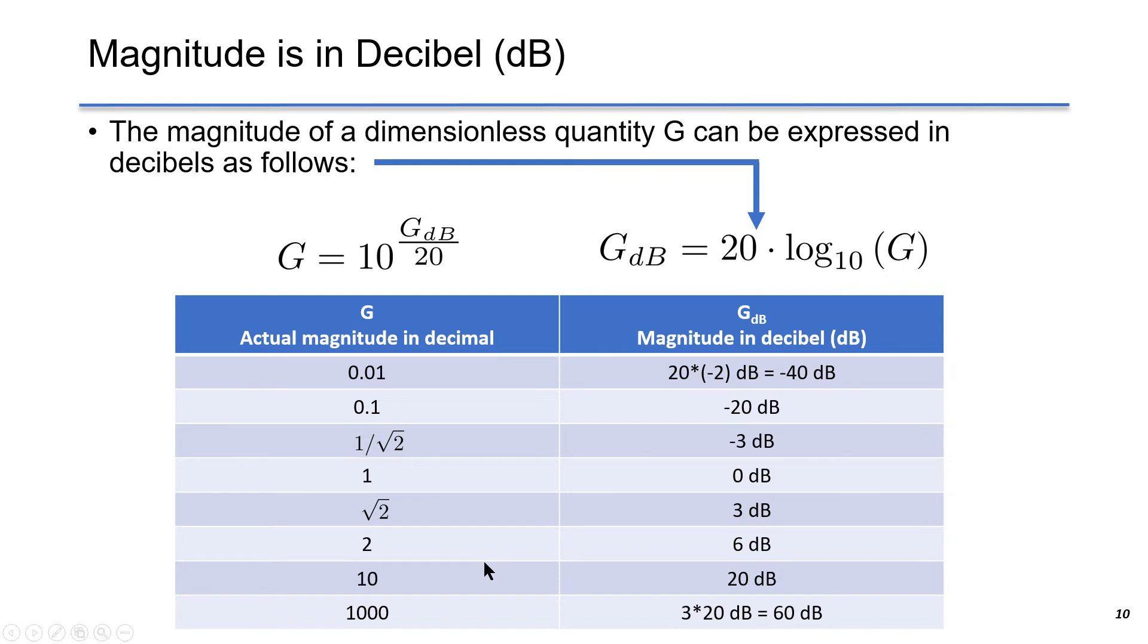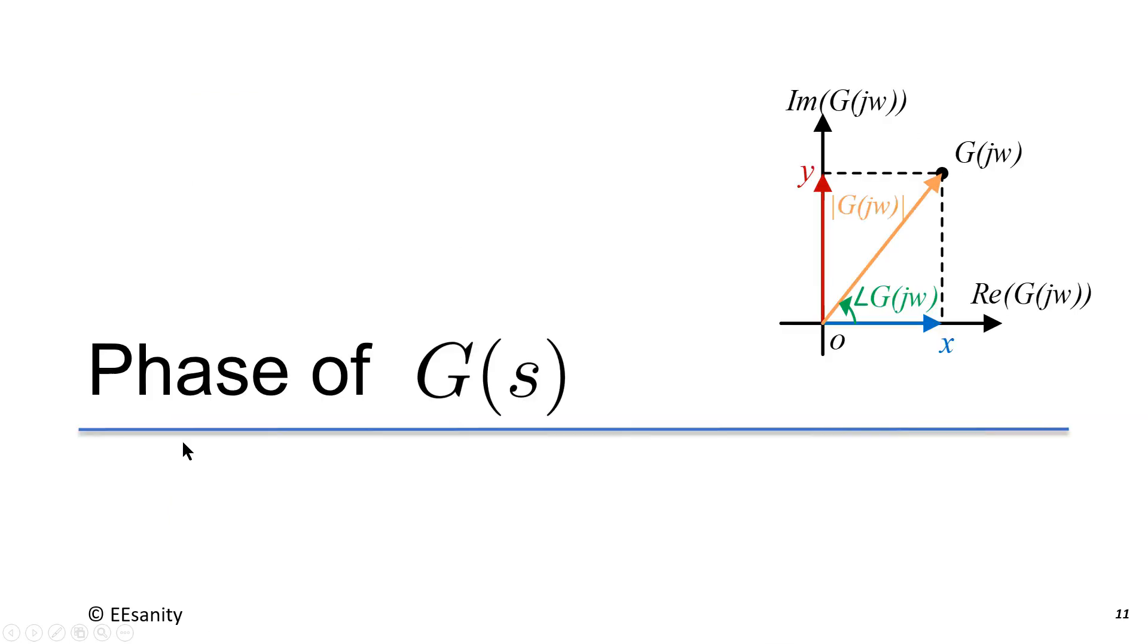The magnitude of a dimensionless quantity G can be expressed in decibels as follows: 20 times log base 10 of G. This table shows quite a few important examples to help you understand the decibels. For example, if G equals 0.01, the log 10 of G is minus 2, and 20 times minus 2 equals minus 40 dB. If G equals 1, log base 10 of 1 is 0. As a result, 1 in decimal equals 0 dB, and so on and so forth. For example, 1,000 in decimal means 60 dB.